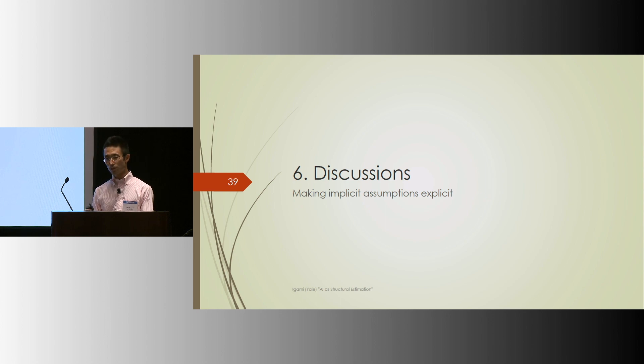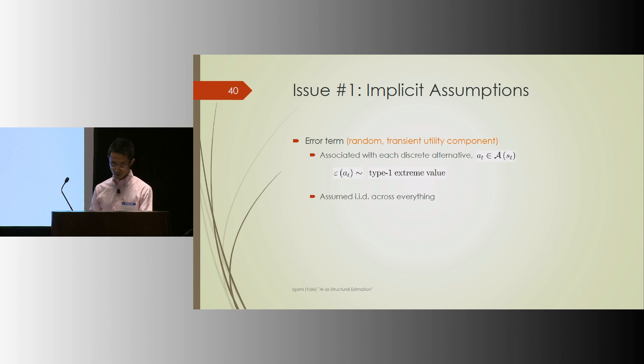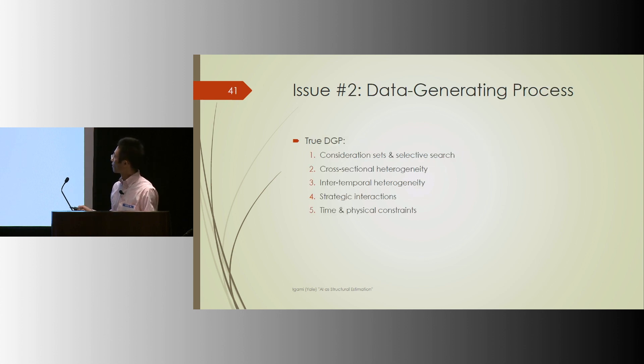So to conclude, I'd like to comment on three interesting issues. One is implicit assumptions throughout. There are many assumptions going behind these game AIs, like our usual IID or logit errors associated with each of the discrete choices, like this move or that move. Of course, once we recognize this implicit assumption, we can make them explicit and think about their implications, like how we capture or not capture the true data generating process.